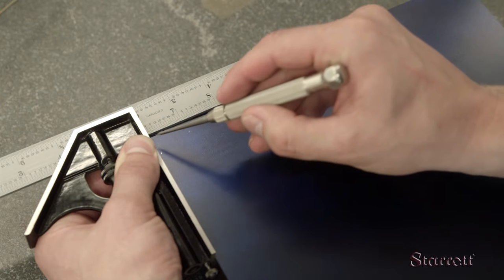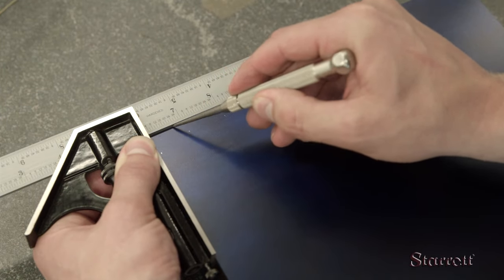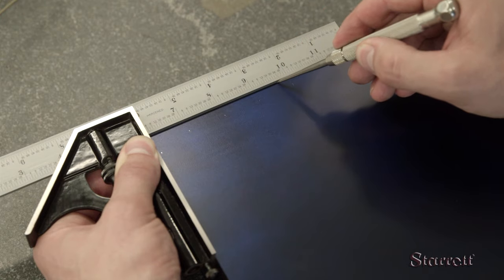With the square head attached to the rule, you can scribe a line precisely perpendicular to the part edge.